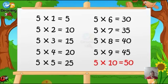All children are going to repeat after me: Five ones are five. Five twos are ten. Five threes are fifteen. Five fours are twenty. Five fives are twenty-five. Five sixes are thirty. Five sevens are thirty-five. Five eights are forty. Five nines are forty-five. Five tens are fifty.